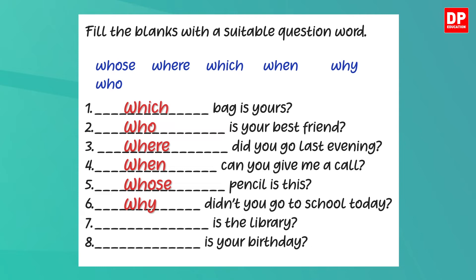Now the seventh one: blank is the library. Here again you need the question word 'where' to find a place. So: where is the library? Let's check the last one. Blank is your birthday. The question is: when is your birthday?